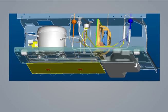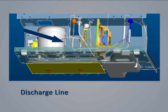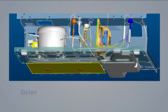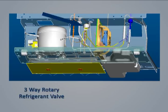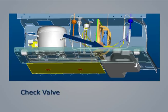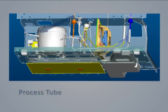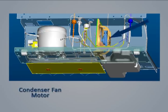Looking at a cutaway of the machine compartment, we see the actual location of the components just identified: compressor, discharge line, condenser, heat loop, dryer, three-way rotary refrigerant valve, check valve, suction line, process tube, and condenser fan motor.